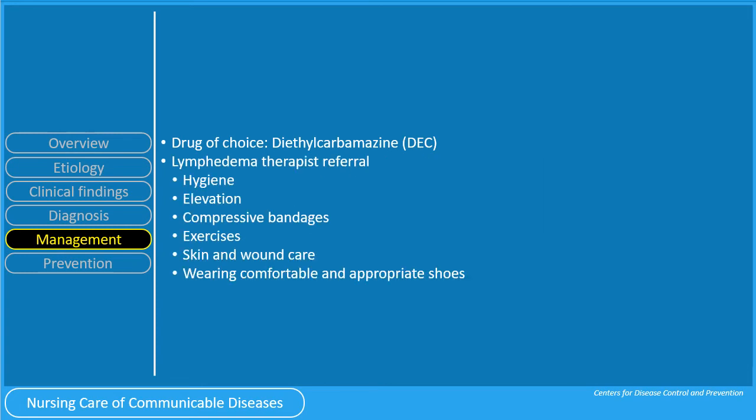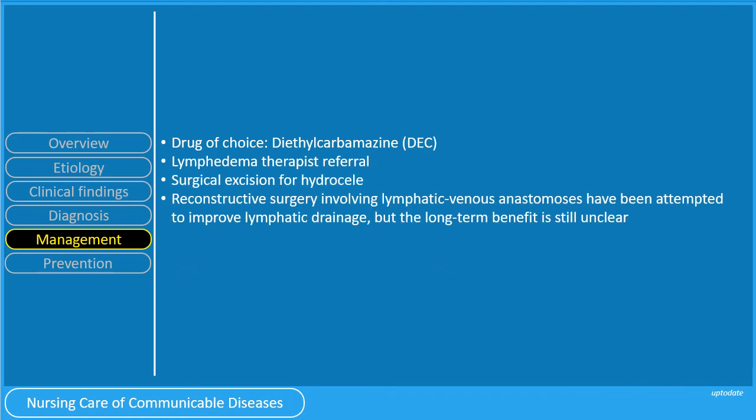Management also involves lymphedema therapy referral. To prevent lymphedema from worsening, patients are referred to lymphedema therapies to learn basic principles of care such as hygiene, elevation, exercises, skin and wound care, and wearing appropriate shoes. Compressive bandages are also used. Surgical management includes surgical excision for hydrocele. Reconstructive surgery involving lymphatic venous anastomosis has been attempted to improve lymphatic drainage, but long-term benefits remain unclear.